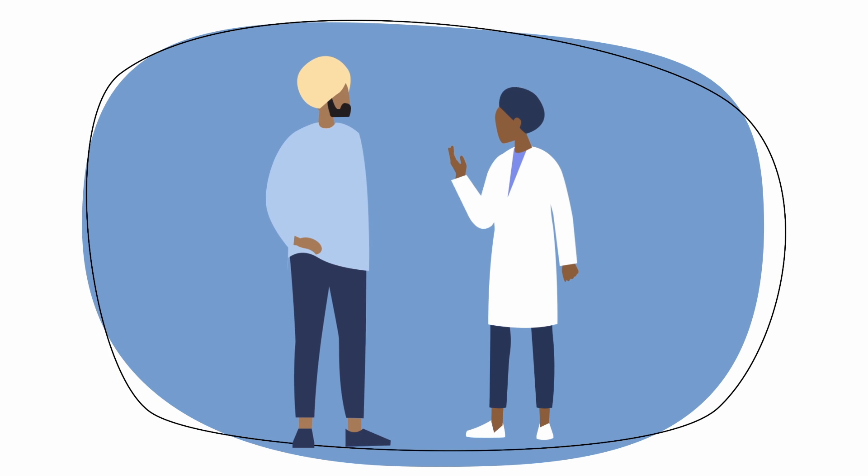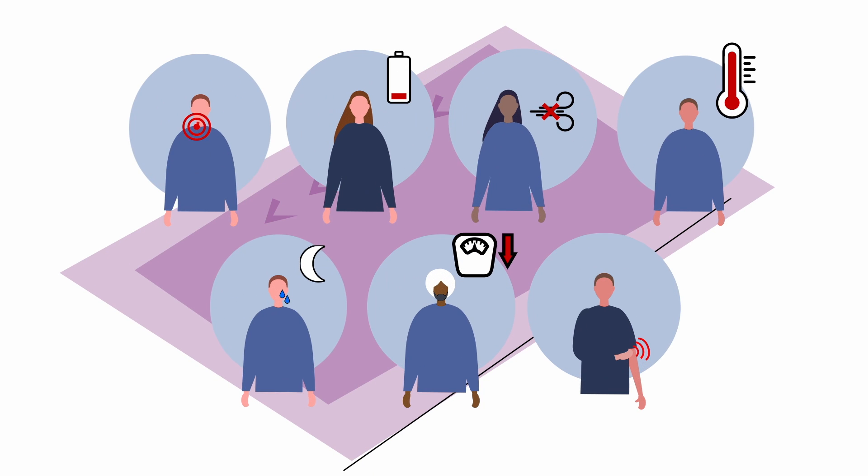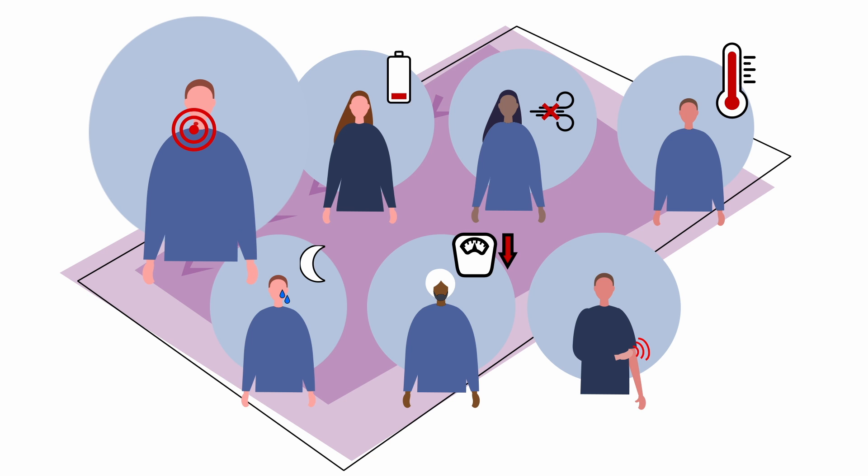Some people with HL have no symptoms, and the disease is picked up on a routine medical examination. When HL symptoms do appear, they can be similar to other less serious illnesses and may include painless swollen lymph nodes in the neck, underarm, or groin.